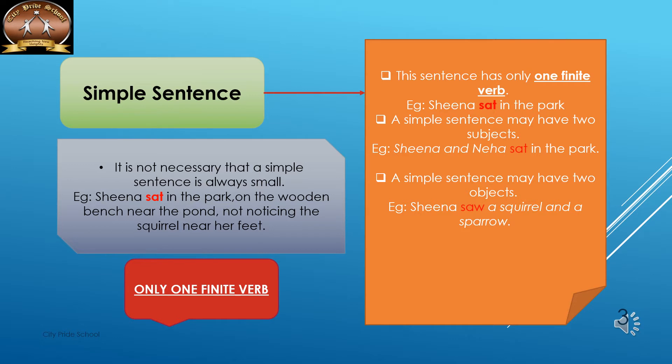It is wrong to assume that a simple sentence is always small — it can be very lengthy. We need to see whether there is only one finite verb. If there is only one finite verb without any conjunction, it is a simple sentence. For example: 'Sheena sat in the park on the wooden bench near the pond not noticing the squirrel near her feet' — only one finite verb 'sat'; 'noticing' is a non-finite verb.